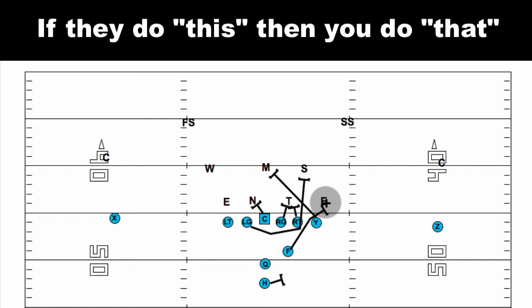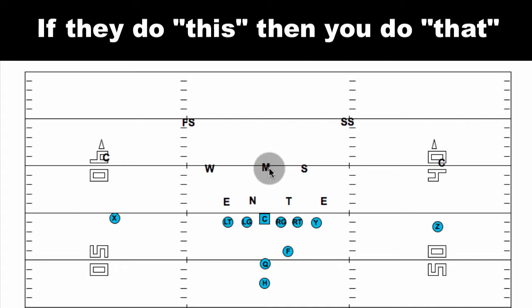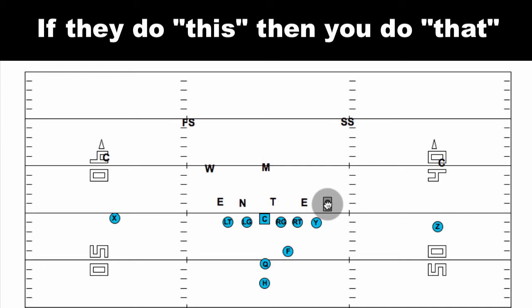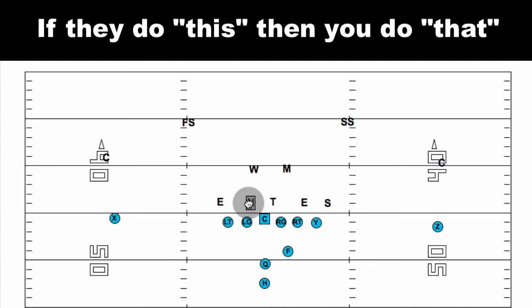Now what if a defense presents you with something else? Let's say the defense shifts into an under front. They're going to walk everybody inside and walk a backer up outside. This is a 4-3 under — because you have a tight end, they're going to have to walk a Sam linebacker up on the tight end. Now let's look at our numbers.